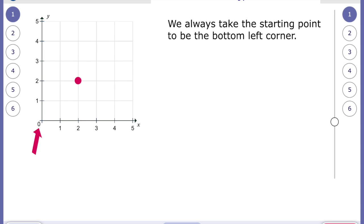So we always take the starting point to be the bottom left corner, and we always go across first and then up. And this is really important. If you remember nothing else from today's maths, then it's always important to remember you go along the bottom, and then you go up the top. A good way to remember it is you come into school, you go along the corridor, and then you go up the stairs to the year four classrooms.